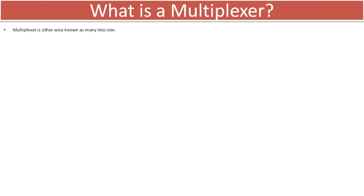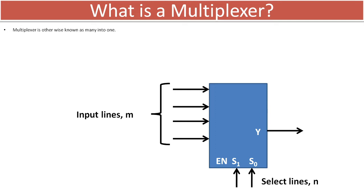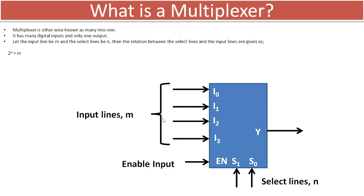We all know what a multiplexer is - it's otherwise known as many to one. In this particular circuit diagram we can see a block diagram with four inputs, two select lines, one output, and the relation between the input and select line is given as 2^n = m, where m is the number of input lines and n is the select lines. Now we have introduced another terminal which we call the enable input.